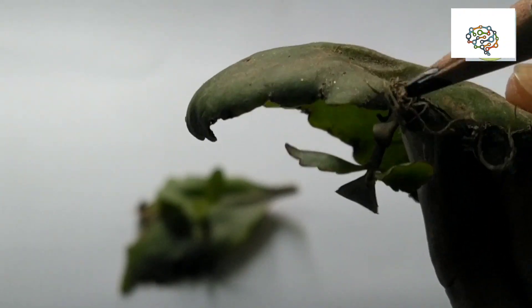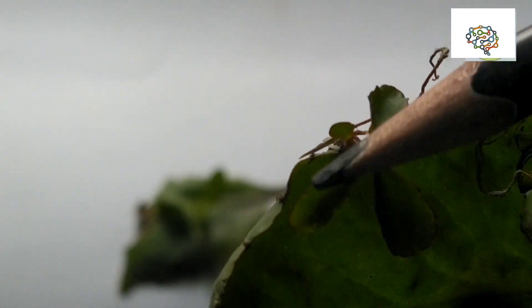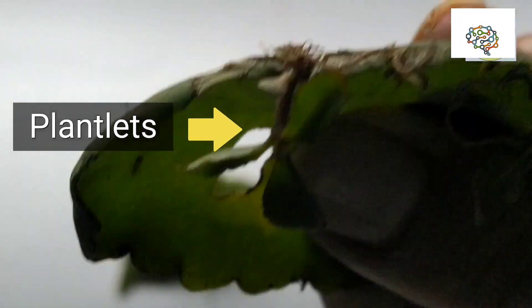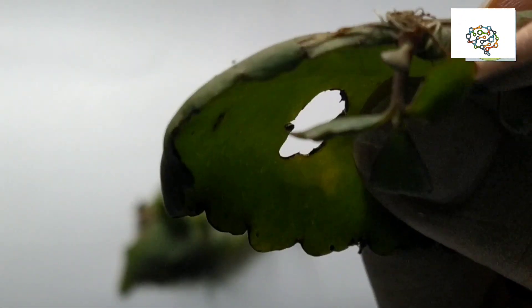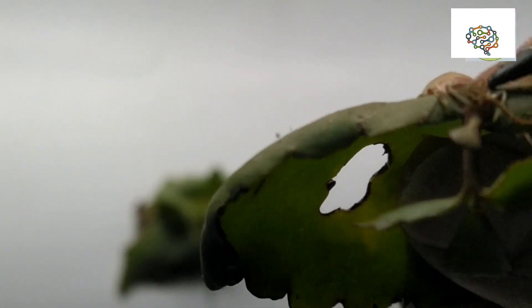These adventitious buds develop into small leaf-like structures. Here we can see leaf-like structures develop from these buds. These leaf-like structures are known as plantlets. In these buds we can see at the upper part stem is growing, at the lower part roots are growing.